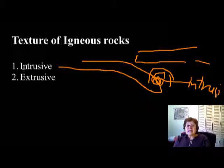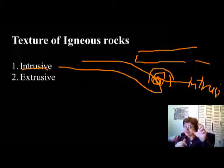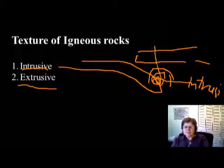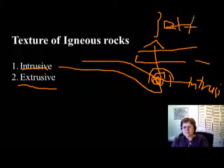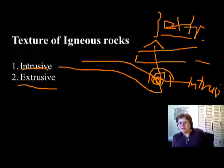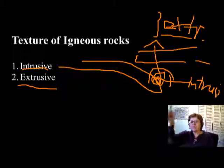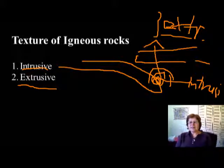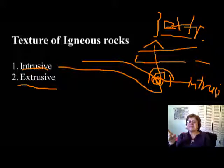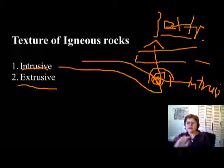If it's intrusive it doesn't make it to the surface, so the cooling is very very slow and therefore the minerals are going to grow big — giving a characteristic coarse texture. On the other hand, when lava goes up to the surface and makes a volcano, we call it extrusive. When you have extrusive igneous rocks, the magma comes to the surface at around 600–700 degrees Celsius, hits the surface at roughly 25 degrees, and cools really fast so crystals stay very small.